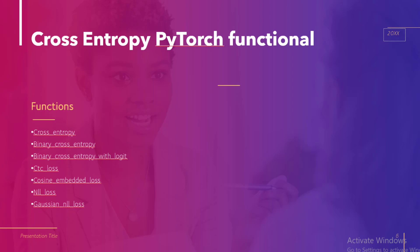Next is binary cross entropy. The binary cross entropy function is used to calculate the binary cross entropy between the target and the input probabilities. Next is binary cross entropy with logits, which calculates the binary cross entropy between the targets and input logits. Next is CTC loss, used as a connectionless temporal classification loss. Next is cosine embedded loss, used to calculate the loss between given tensors and also to measure whether two inputs are similar or not.